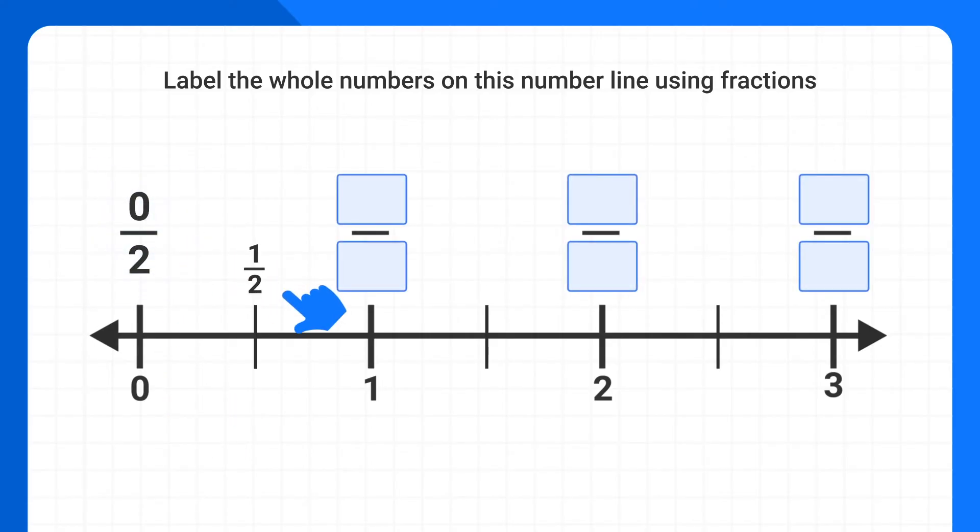The next dash is 1 half. And after that, we get to 1 whole, but as a fraction, it's just another half. It's 2 halves. And then we have 3 halves, and 4 halves, which we can see as 2 wholes.